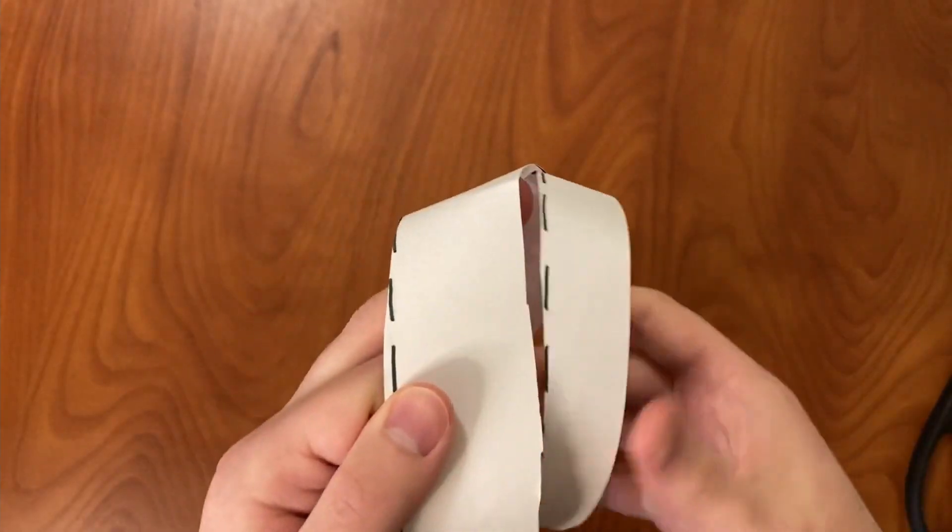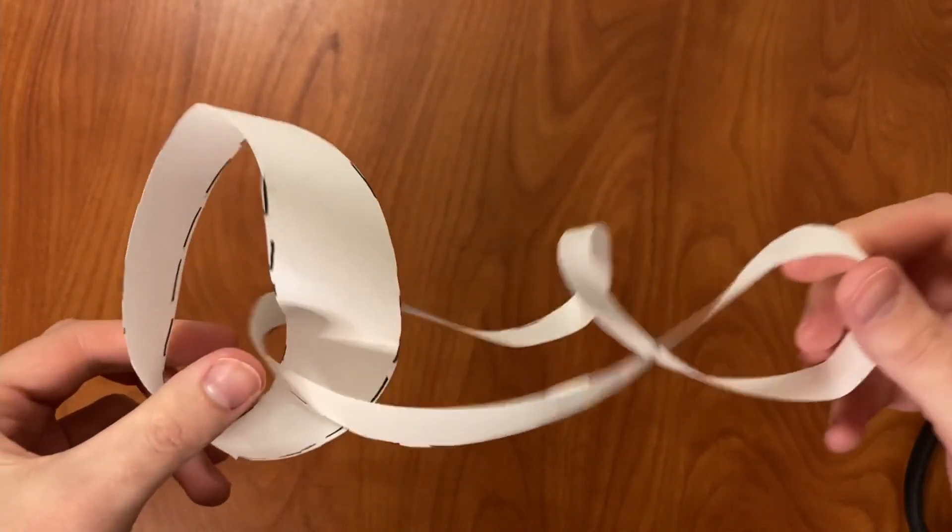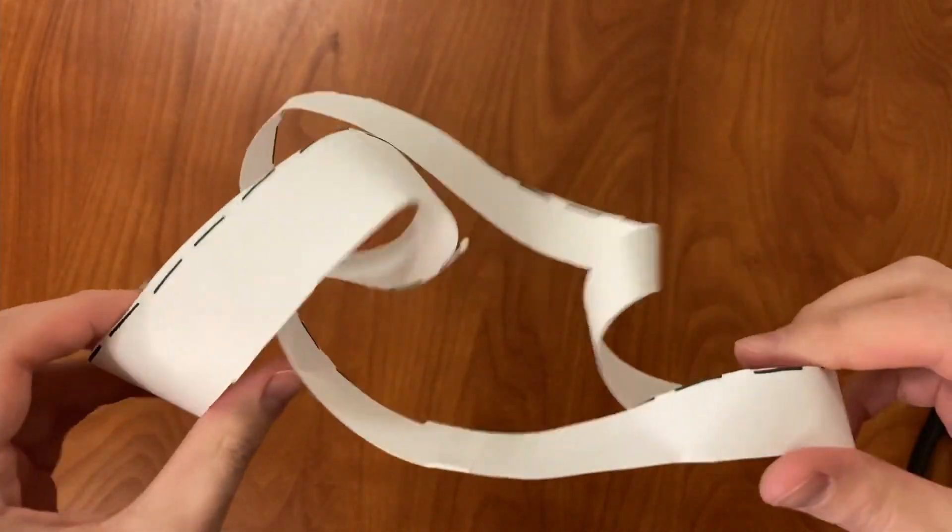If instead you cut the Mobius strip a third of the way down, you get two loops that are interlinked. That's pretty neat, but why does it happen? Could we have predicted it before we made the cut?